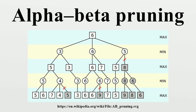Therefore, the other branches of the node do not have to be explored. Additionally, this algorithm can be trivially modified to return an entire principal variation in addition to the score. Some more aggressive algorithms such as MTD do not easily permit such a modification. The pseudocode for the fail-soft variation of alpha-beta pruning is as follows.